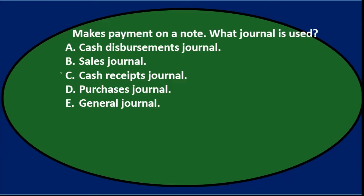Next question: makes payment on a note — what journal is used? A. Cash disbursements journal. B. Sales journal. C. Cash receipts journal. D. Purchases journal. Or E. The general journal.